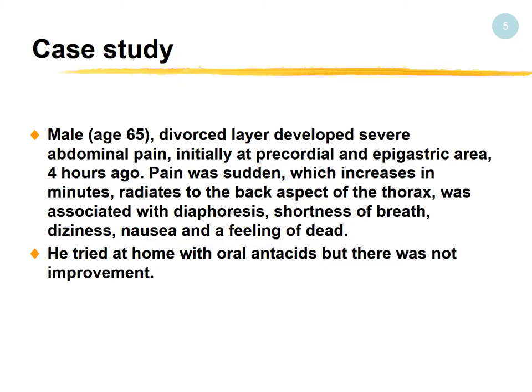Let's see a case study. A male, age 65, a divorced lawyer, developed severe abdominal pain initially at the precordial and epigastric area about 4 hours ago. Pain was sudden, increasing over minutes, radiating to the back aspect of the thorax, associated with diaphoresis, shortness of breath, dizziness, nausea, and feeling of death. It looks like the patient was having angina or possibly a myocardial MI.